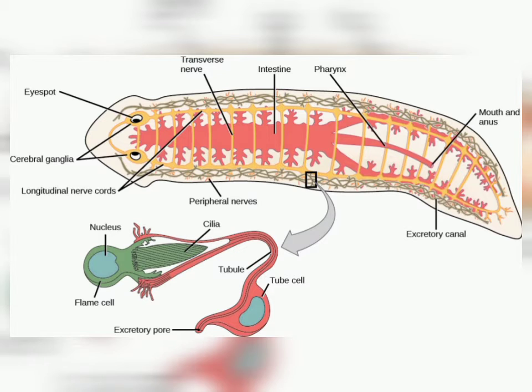Flatworms are bilaterally symmetrical, triploblastic and acoelomate animals with organ level of organization.